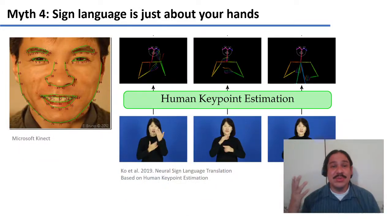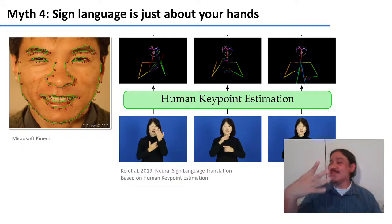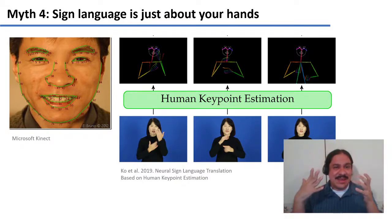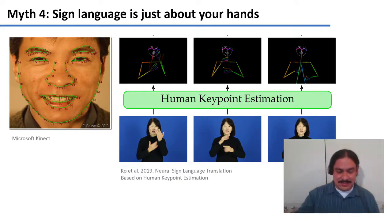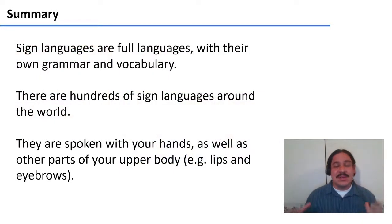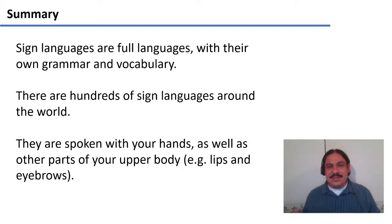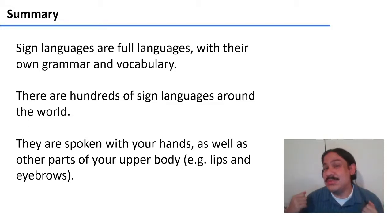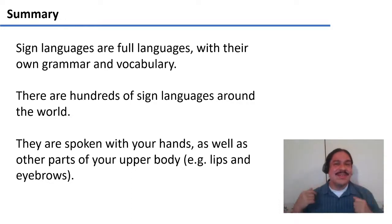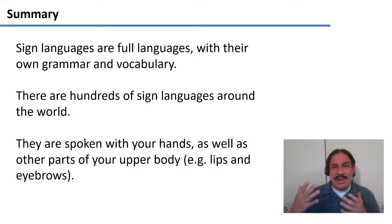If we wanted a computer to understand ASL, we would need a camera that deciphers the motions of all of these parts, so that an artificial intelligence could recognize those words. As a quick summary: sign languages are full languages — not just imitations of English. They have their own grammar and their own vocabulary, and there are hundreds of sign languages around the world. They are expressed with the hands, but also with other parts of the body such as the lips and eyebrows. So if someone tries to sell you ASL gloves — that's not going to work. During the quarter, we're going to learn a lot more about how sign languages are structured and how to describe them linguistically.